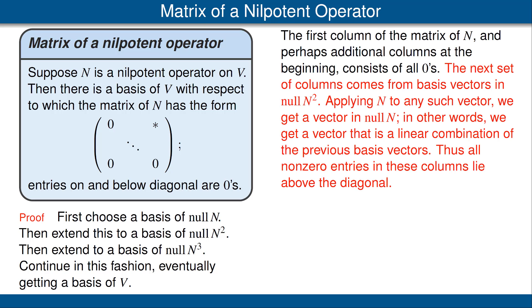Now the next group of columns comes from basis vectors in N squared. If we apply N to a vector in the null space of N squared, we get a vector in the null space of N.